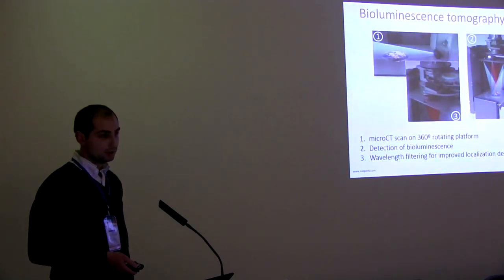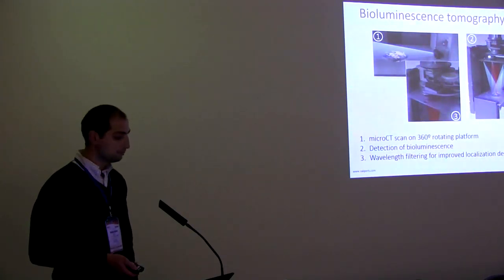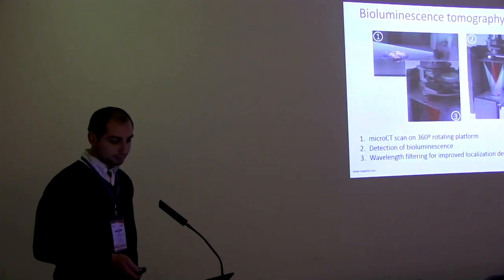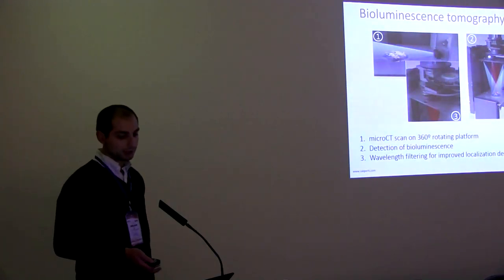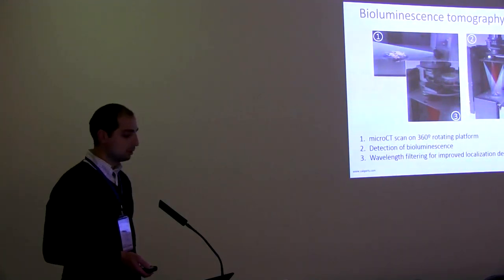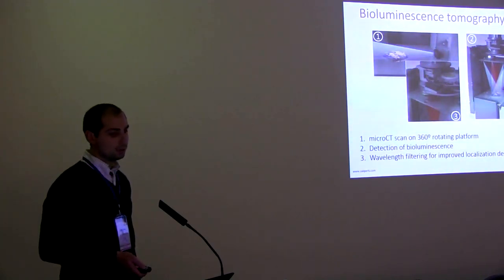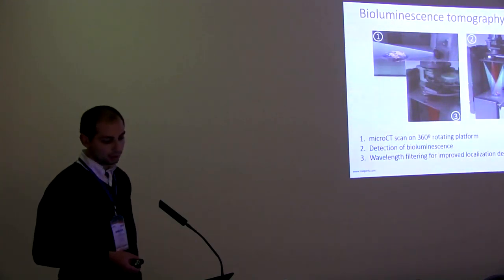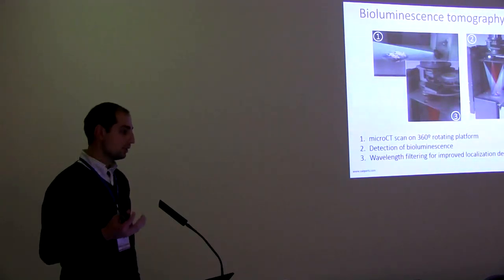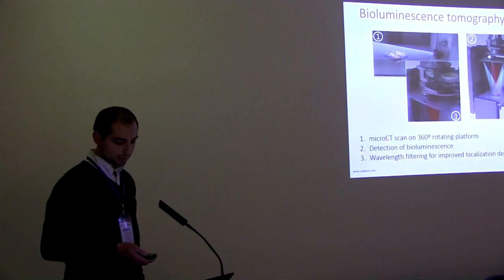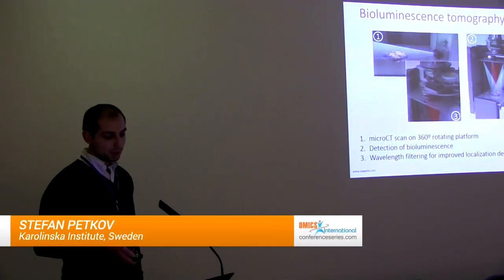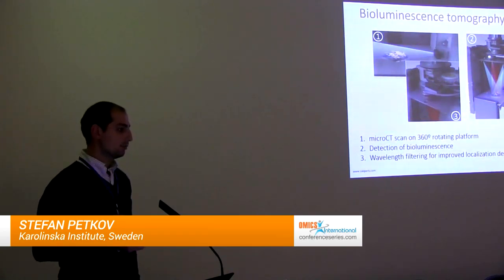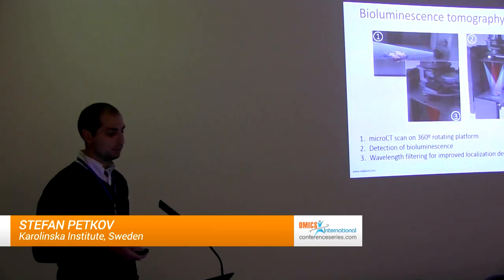Bioluminescence tomography combines the detection of bioluminescent light with a micro-CT scan. Small animals are first subjected to the tomography, and then the bioluminescent light passes through a series of filters which break it down. Since the light is absorbed passing through the tissues, the machine that detects it can take advantage of that to determine where the source of the signal is.